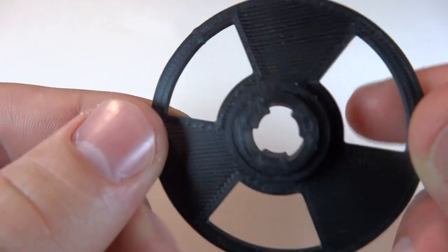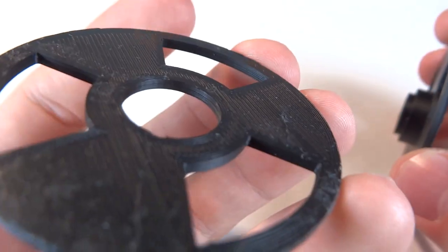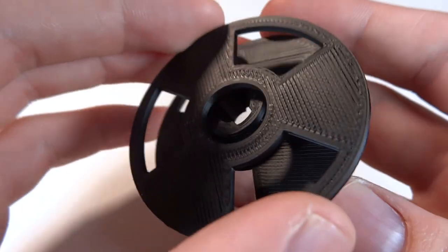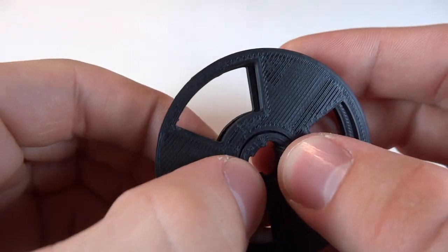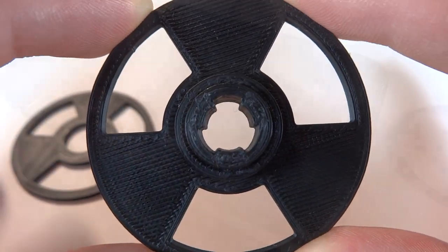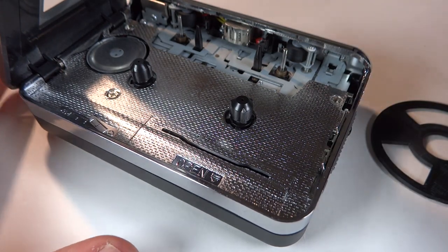The reels finished printing, and this is what I got for an end result. As you can see, the center hole is a bit larger. That's just to make putting it together easier. Another cool feature of this is that it's compatible with reel spools on a normal cassette machine.